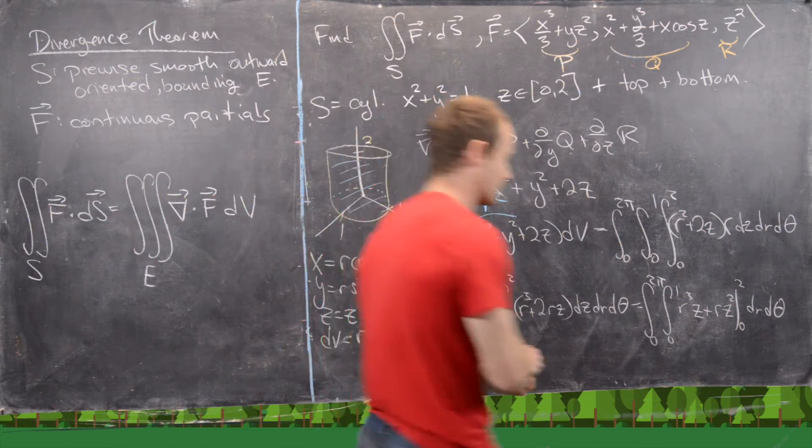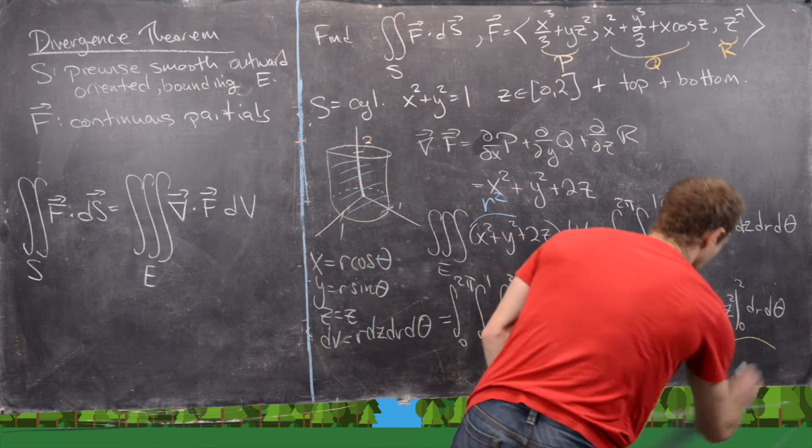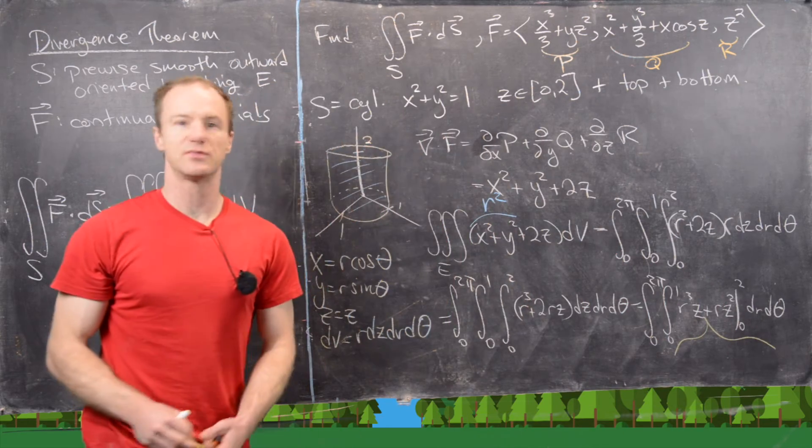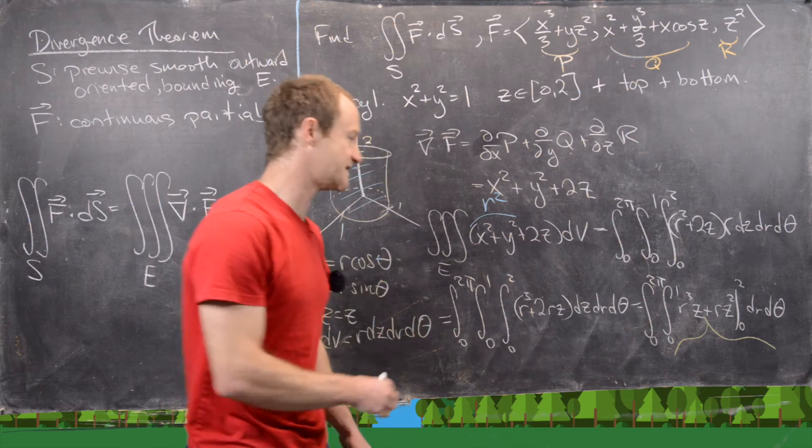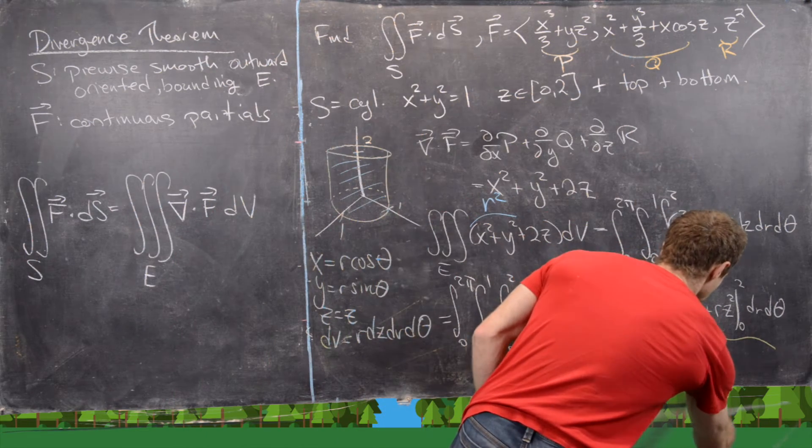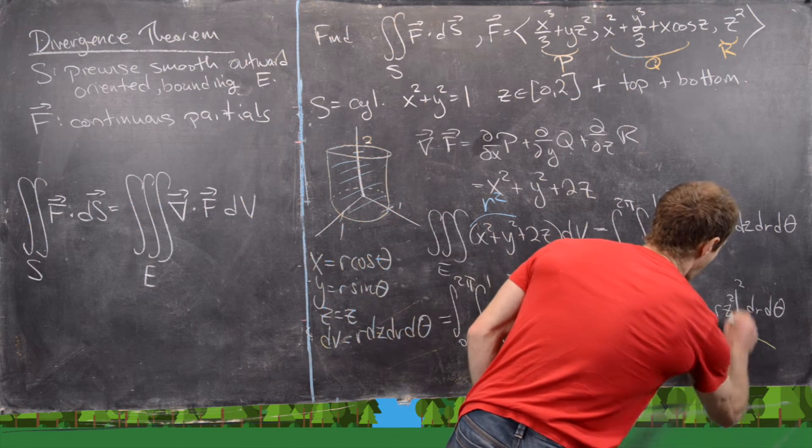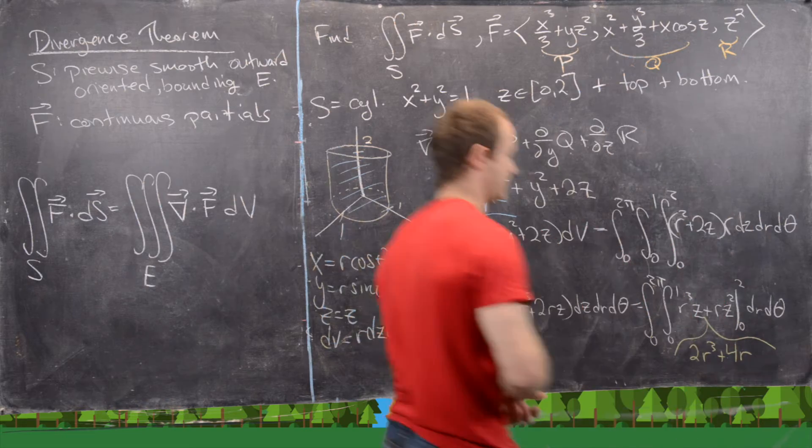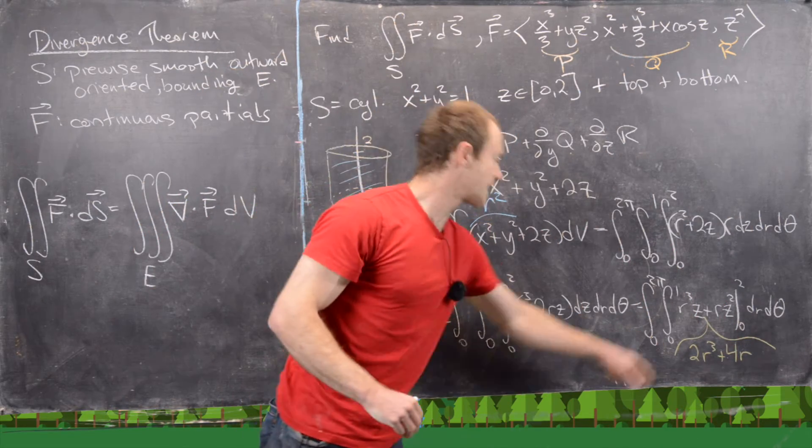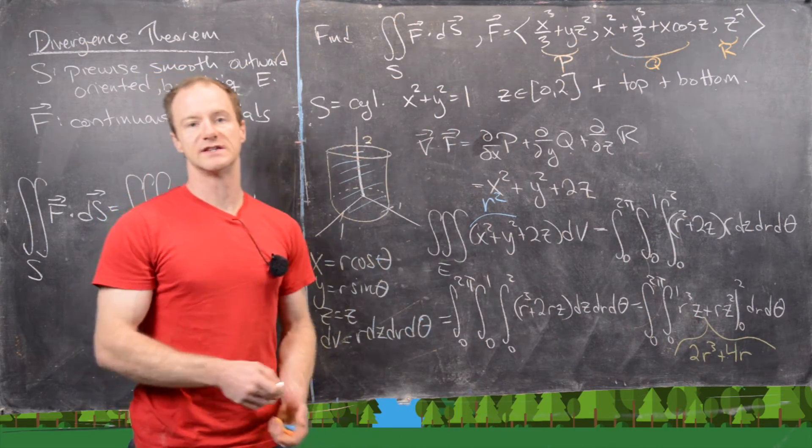So let's see what we get for that. I'll just write it down here, and then we'll move everything to the top. So plugging in 2 for z, we get 2r cubed plus 4r. So now I'll go ahead and bring that up, and then we'll continue on.